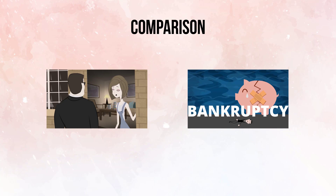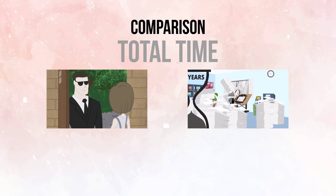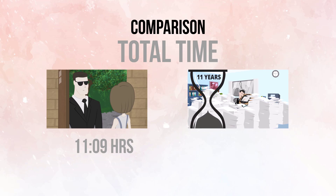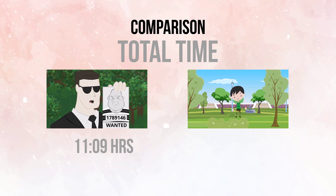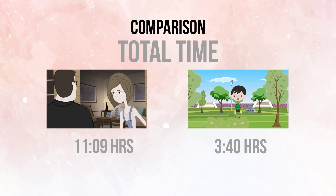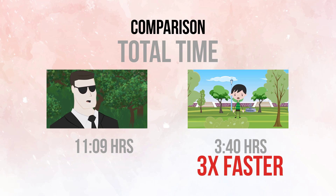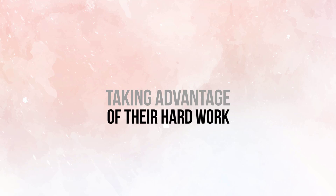Now let's compare the total time. Using Moho Pro, I invested 11 hours per minute of animation. In Crazy Talk Animator, check this out — three hours and 40 minutes per minute of animation. That's three times faster. Why? Because we are taking advantage of the previous work done by their designers.